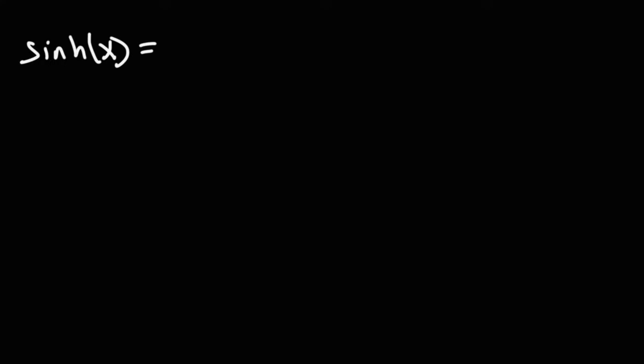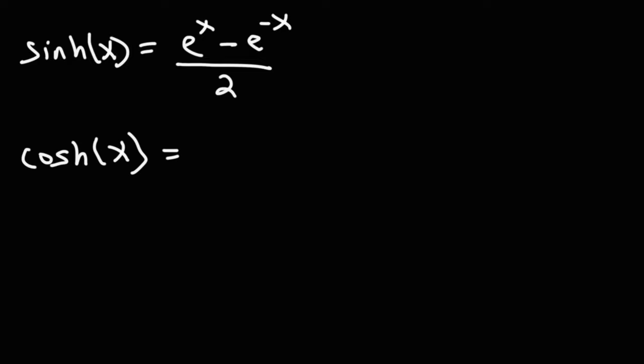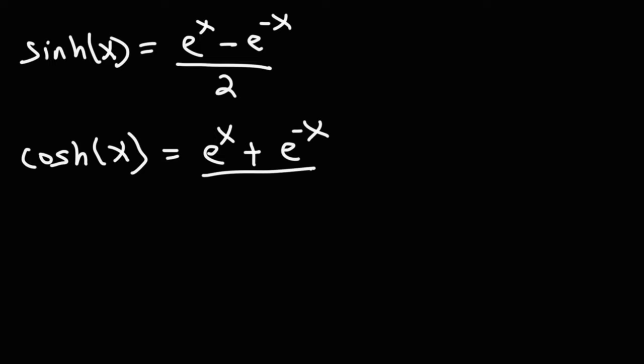Hyperbolic functions are basically combinations of exponential functions. Hyperbolic sine is equal to e to the x minus e to the negative x divided by 2, so it's just the combination of these two exponential functions. Hyperbolic cosine is very similar — the only difference is we change the minus sign to a plus. So it's e to the x plus e to the negative x divided by 2.